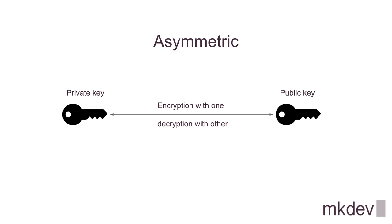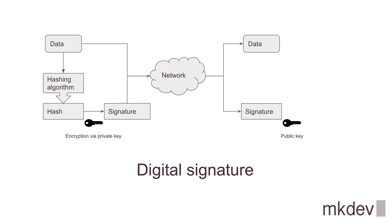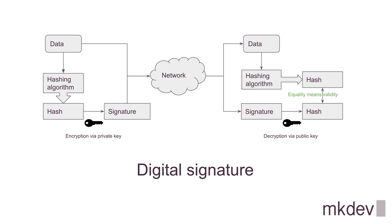A public key is safe to share with others. One example of such a public key is your SSH public key. While symmetric cryptography is used only for encryption and decryption purposes, asymmetric cryptography is also used for creating and verifying digital signatures. A signature of data is just a checksum for that data encrypted via a private key. To verify the signature, one should decrypt it using the public key and check for equality with the computed checksum for the data. After that, one can be sure of the data integrity.